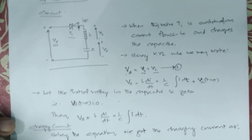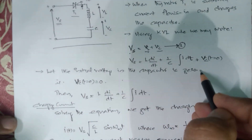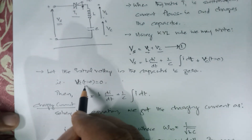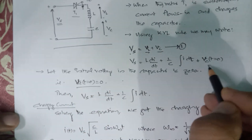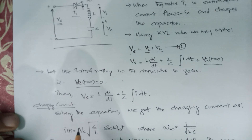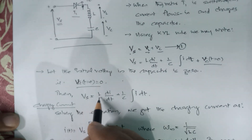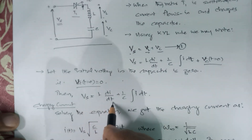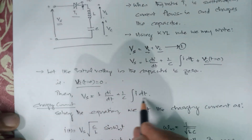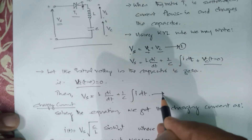We assume that the initial voltage in the capacitor is 0, which means Vc(t=0) equals 0, so that term becomes 0. Now equation 1 can be written as: Vs equals L·di/dt plus (1/C)∫i dt. Let this be equation 2.